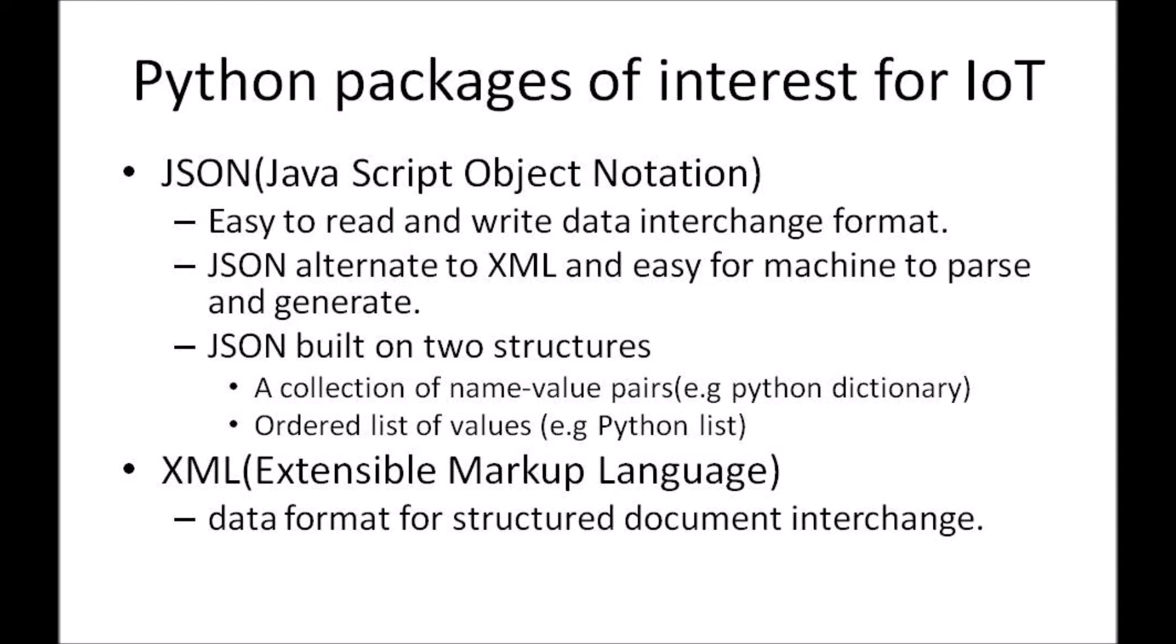So there are four very important files. The first one is your JSON Python package, XML, HTTP, URL-LIB and then SMTP-LIB. So these are something very important and useful.